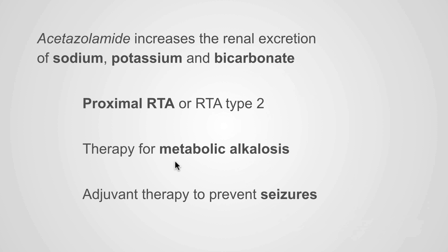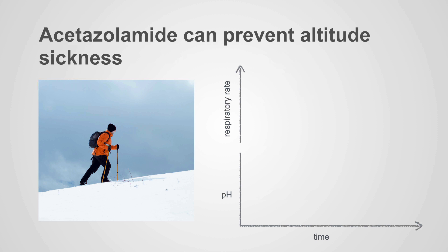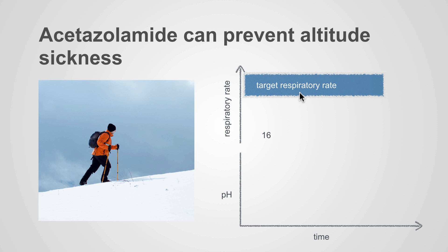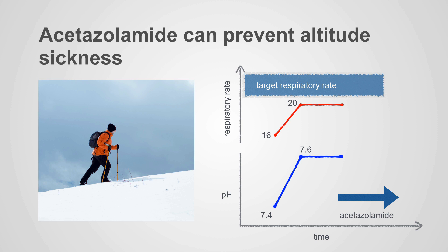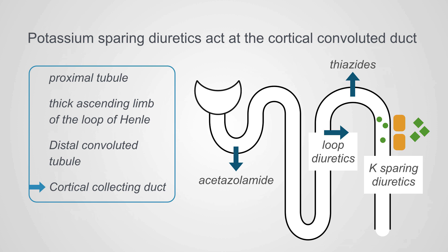This can be leveraged to treat metabolic alkalosis, and it's used in adjuvant therapy to prevent seizures. Another use for acetazolamide is to prevent altitude sickness. Preventing altitude sickness requires some degree of hyperventilation. Patients start with a respiratory rate of 16, and as they ascend, that rate may go to 20, but it still hasn't reached the target rate. The reason it stops going up is that patients reach a degree of respiratory alkalosis that prevents further hyperventilation. If you intervene with acetazolamide, you can induce a metabolic acidosis and lower the pH to around 7.5, allowing further hyperventilation back to the target respiratory rate.